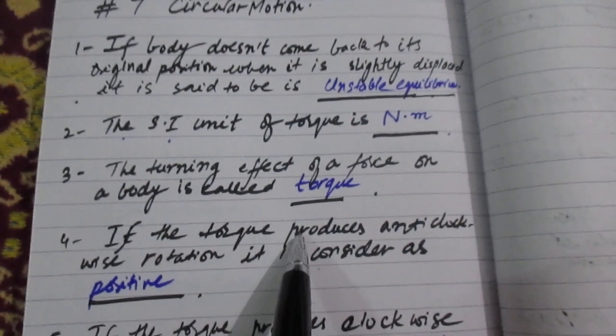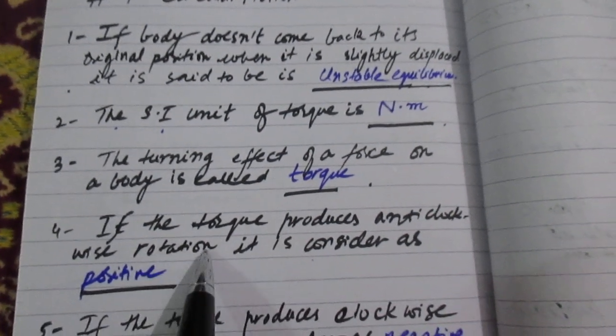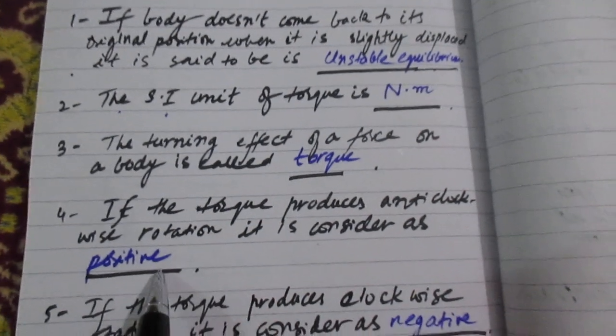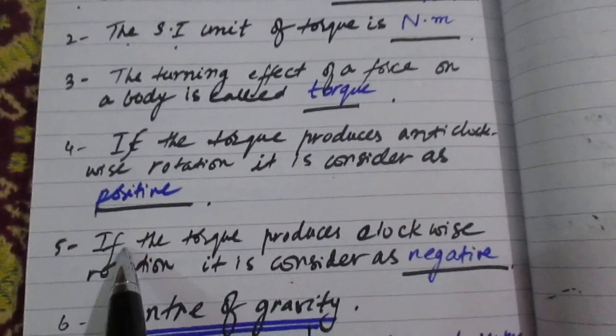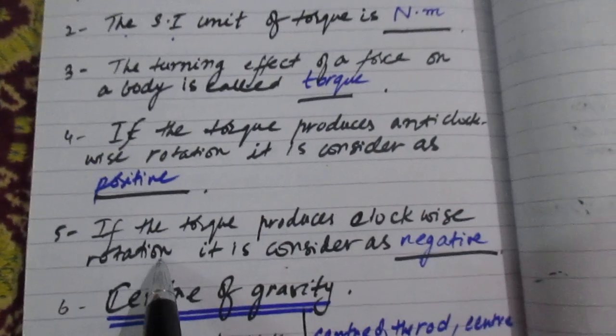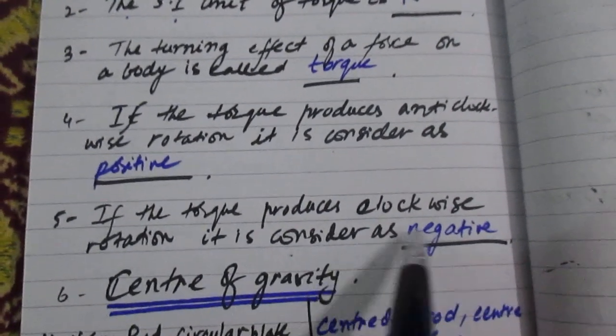If the torque produces anticlockwise rotation, it is considered as positive. If the torque produces clockwise rotation, it is considered as negative.